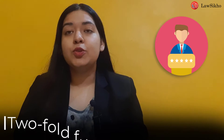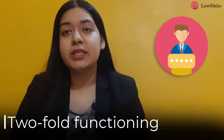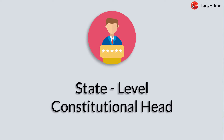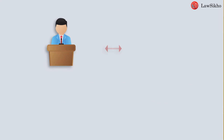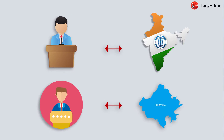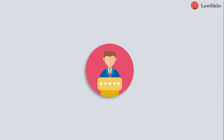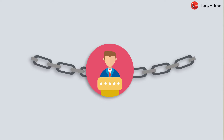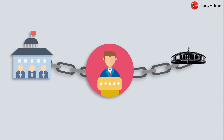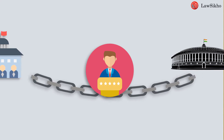If we talk about the two-fold functioning of the Governor, the first point is that the Governor is the State-level Constitutional Head. We can say what the President is to a country, the Governor is to a State. The second function is that the Governor is a link between the State Government and the Central Government. We can also understand that the Governor acts on the advice of the Council of Minister.